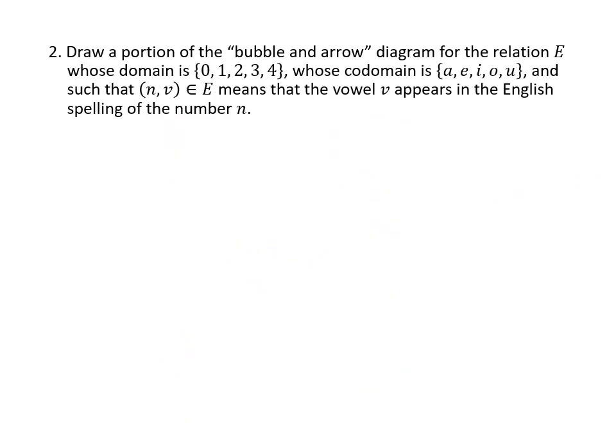This is a similar problem, but this time we're talking about a relation. A relation is different from a function because for a function, for each domain element, you have to have one and only one codomain element associated with that domain element. For a relation, you can have any kind of association you want between domain elements and codomain elements. But the bubble and arrow diagram is going to start out the same way. We have our domain, we have our codomain.